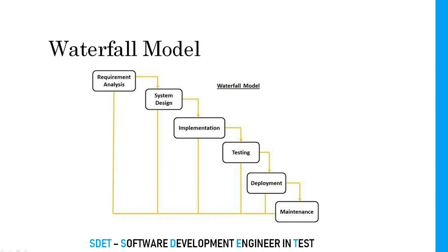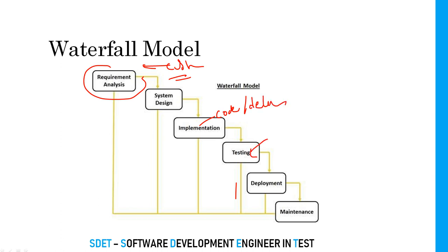Now we'll discuss two process models. The Waterfall Model basically talks about the complete process — it is an example of SDLC. Waterfall Model is a very old and classic model, also called a linear model. In this model, first we get requirements from the customer, then we design the software, then implement it by coding, then test it, then deploy it in the customer environment, and then maintain it.